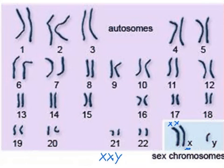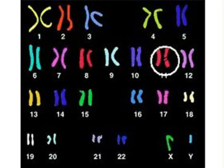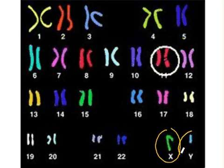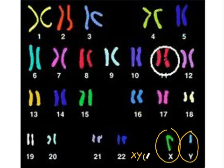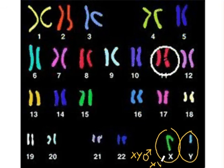In this third karyotype, we clearly see one X chromosome and one Y chromosome, meaning the individual has 1X and 1Y, so the sex of this individual would be male. Had there been 2X chromosomes, the fetus would have been female. So the sex of the individual can also be determined.